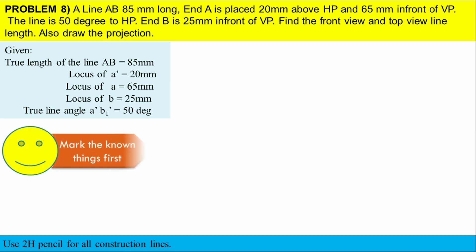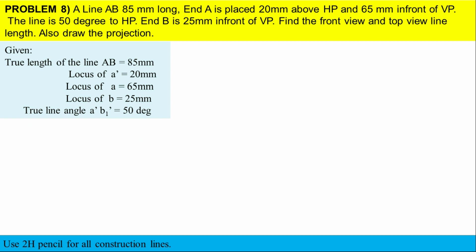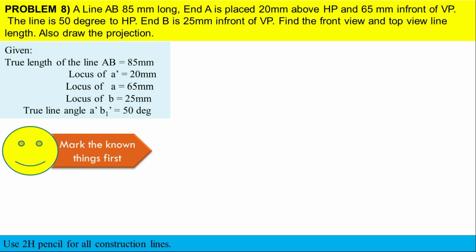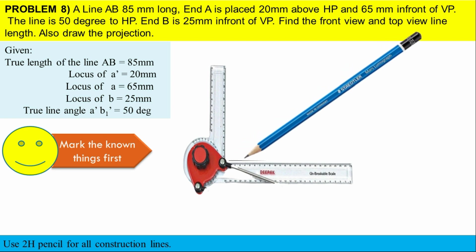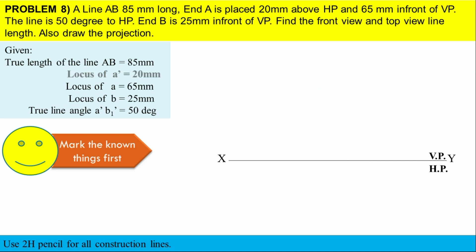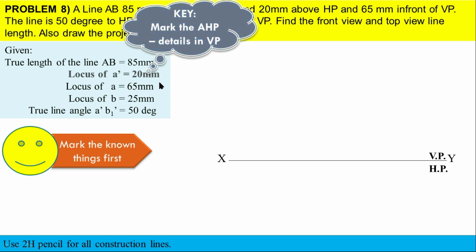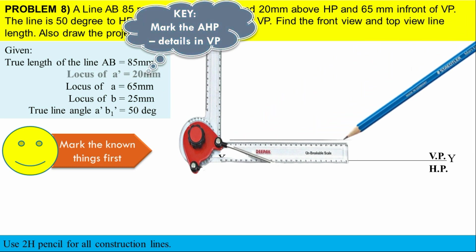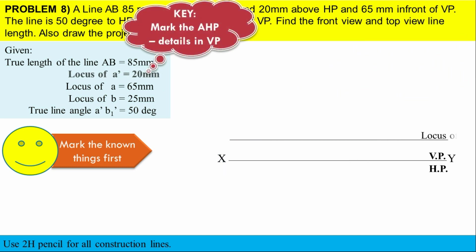Let's mark the known things first. After marking the known things, just refer to the base diagram - definitely you can solve this kind of problem. If you know the base diagram thoroughly, you can solve any kind of problem. First, draw the XY line and mark the VP and HP. We have to mark the locus details. I am going to mark my locus of A' - that is 20 mm from the XY. Draw the locus of A' line with the help of a drafter and 2H pencil. After marking, give the naming to the respective locus line immediately.